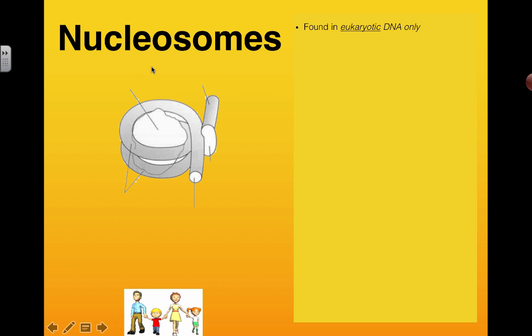So prokaryotic DNA is not arranged in a supercoiling fashion with nucleosomes like this. So it's one thing you can add when you're asked to distinguish between prokaryotic and eukaryotic chromosomes and that is that eukaryotes only contain these nucleosomes.